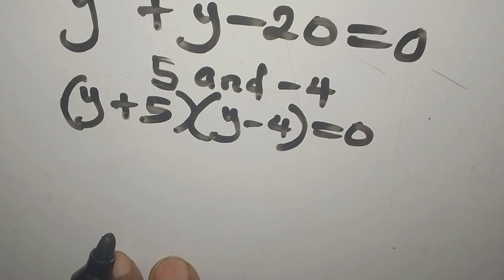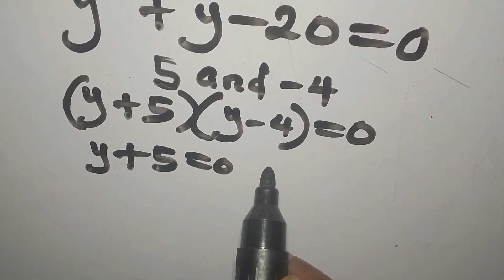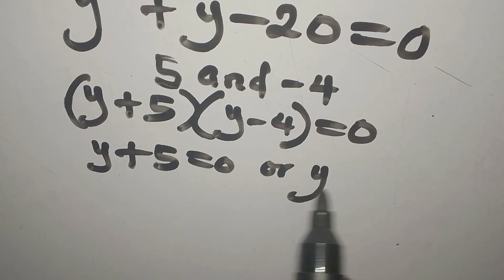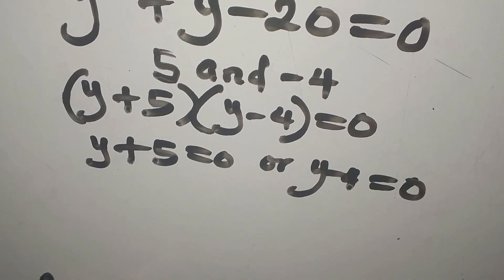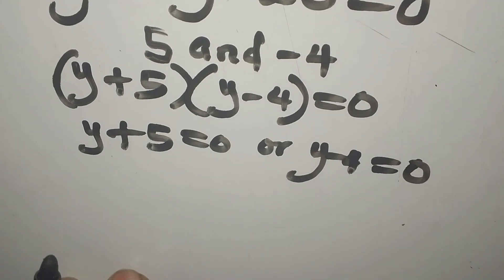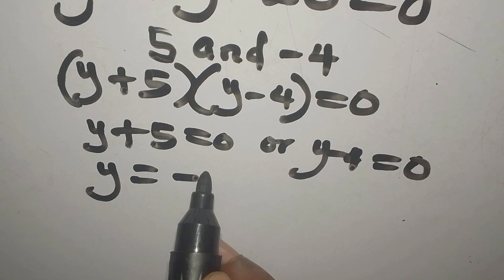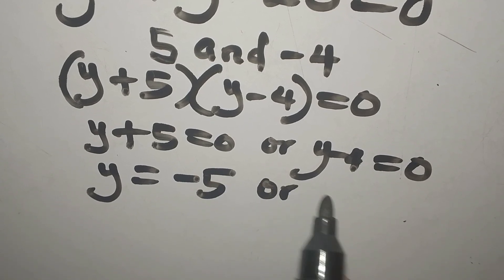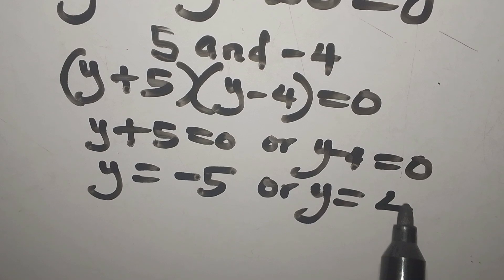So from here now, it's either y plus 5 is 0 or y minus 4 equals 0. So y from here is going to be 0 minus 5, and that will give minus 5. Or y from here will be 0 plus 4, and that is 4.